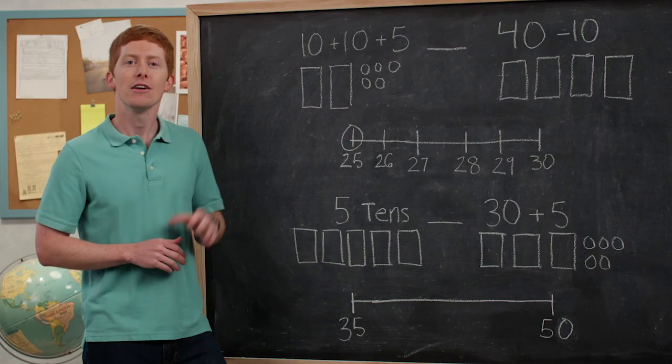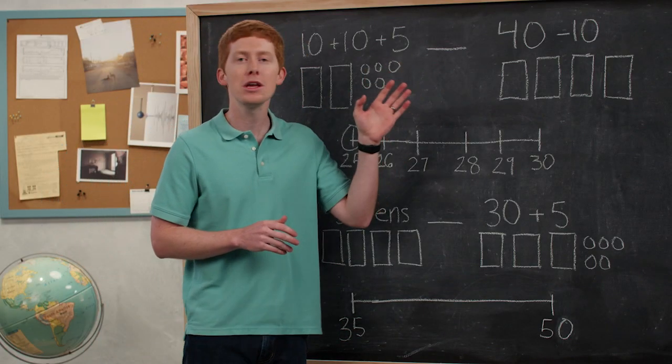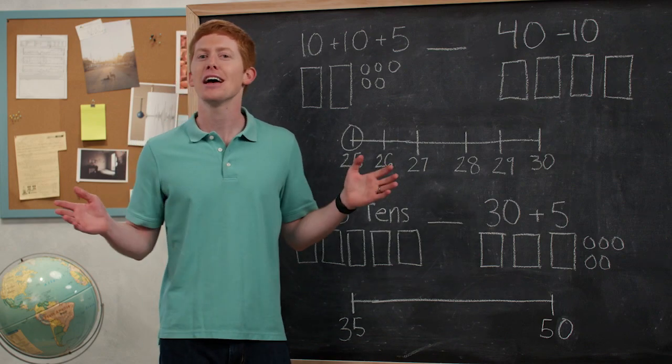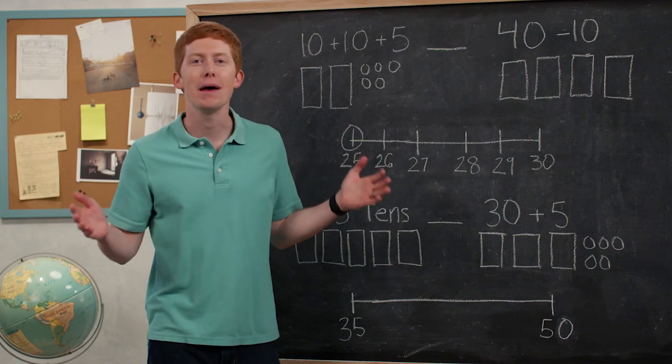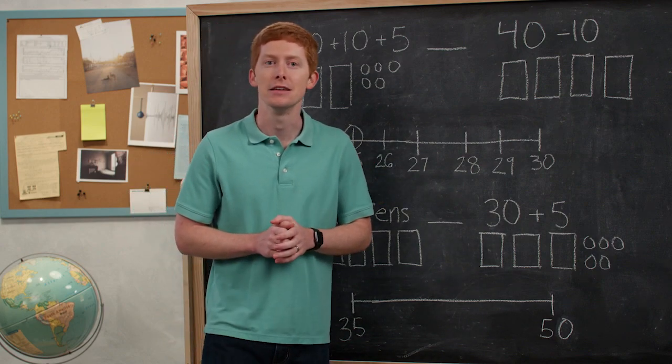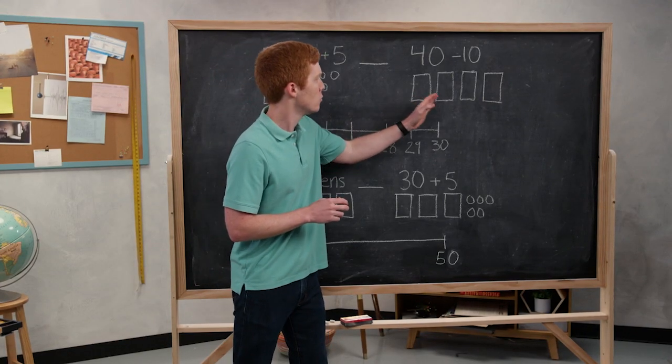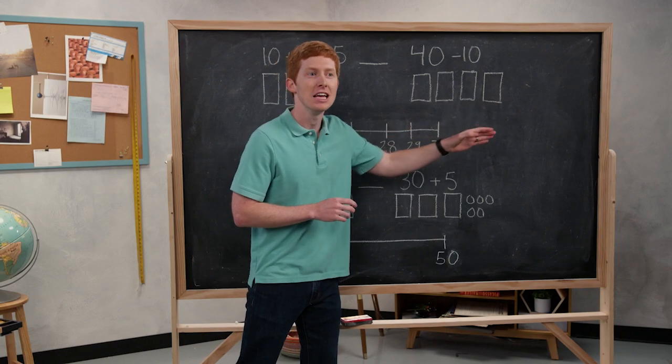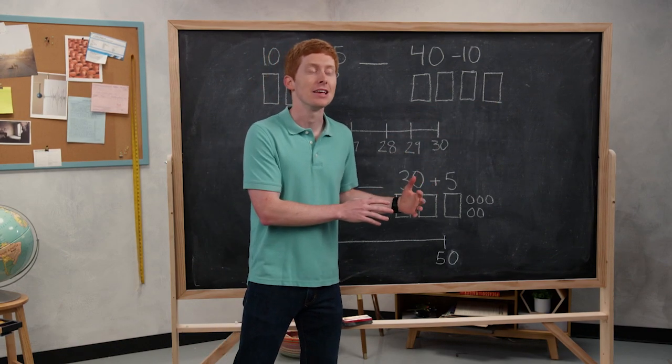Now, what about the right side? If I go over to the right side and I say, you know what, 40 minus 10, how could I draw that out? Well, 40 I know is made up of groups of 10. So I need 10, 20, 30, 40.